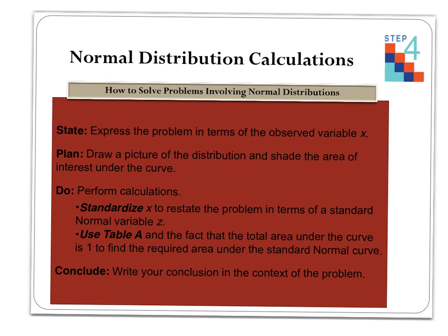So these are some notes on how to calculate normal distributions. These four steps are something that we're going to use a lot this year. State, plan, do, and conclude. State, we're going to express the problem. Plan, we're going to draw a picture and shade the region that we're looking for. Do, we're going to actually calculate the z-score, and use table A to calculate the percentages that are necessary, and conclude. We're going to write the conclusion in the context of the problem. So remember, state, plan, do, and conclude. If you remember, Spanish people do the dance, the cha-cha.